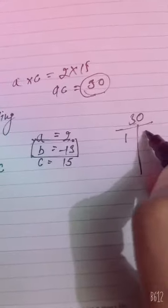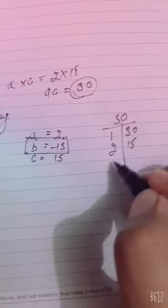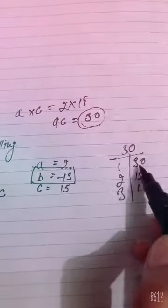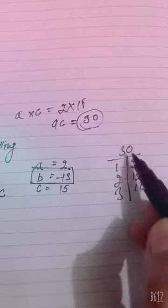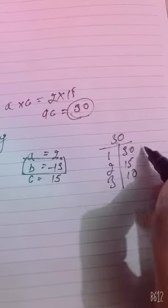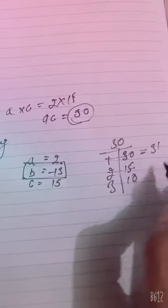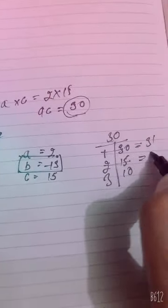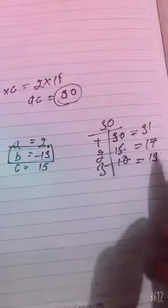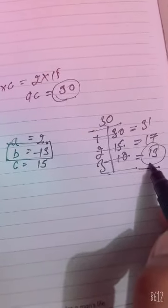In the table of 1, it comes at place of 30. In the table of 2, it comes at place of 15. In the table of 3, it comes at place of 10. So the factor pairs are: 1×30 giving sum 31, 2×15 giving sum 17, and 3×10 giving sum 13. We can already see that 3 and 10 is the correct pair whose sum is 13.